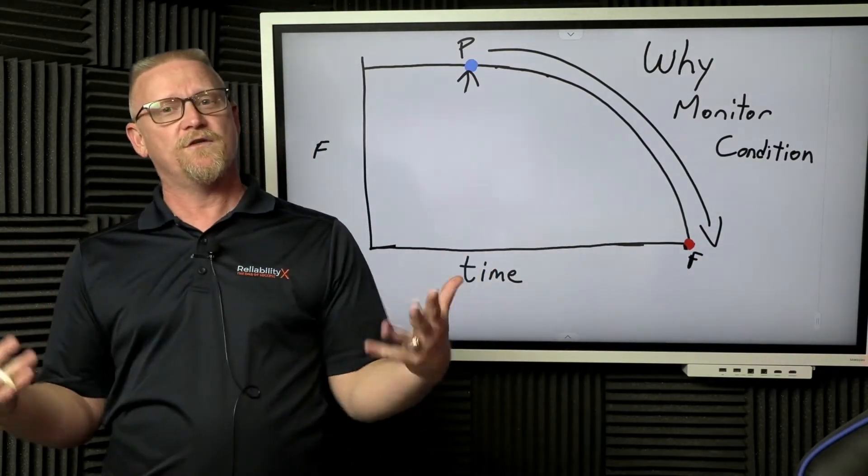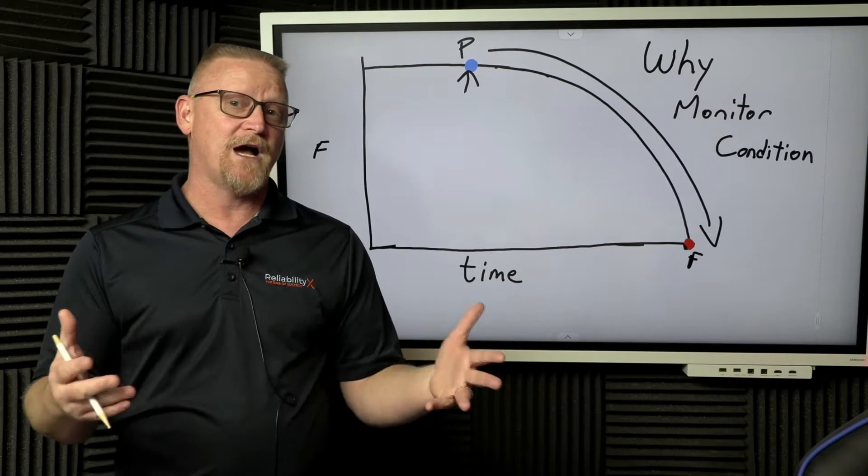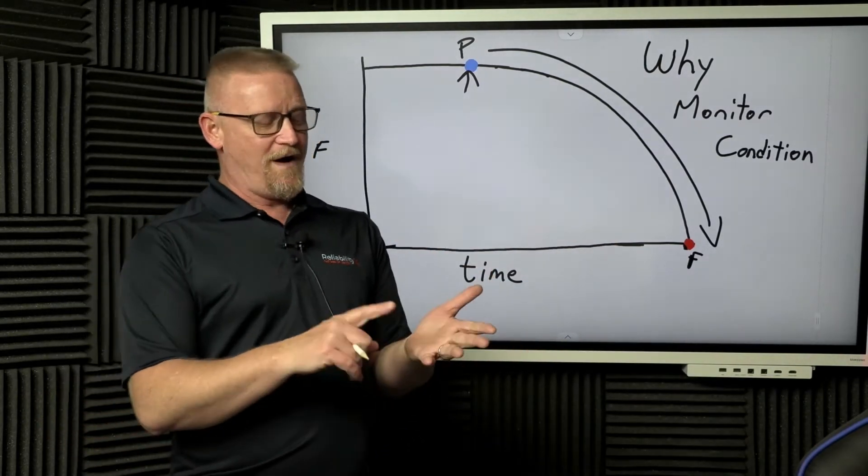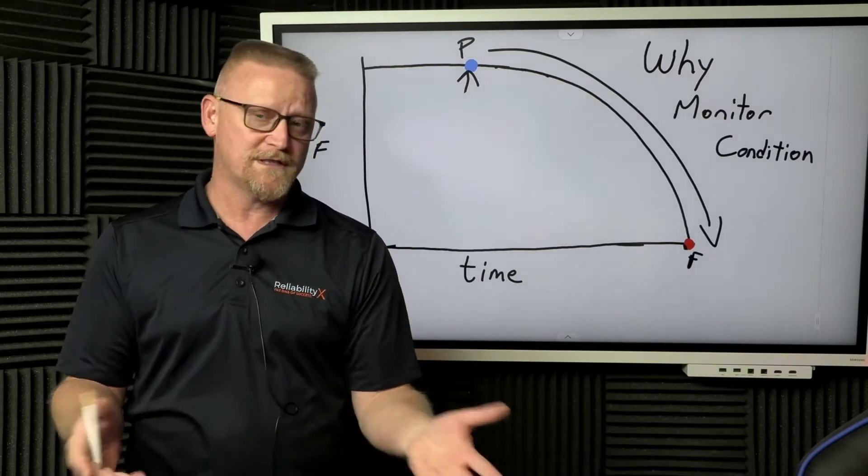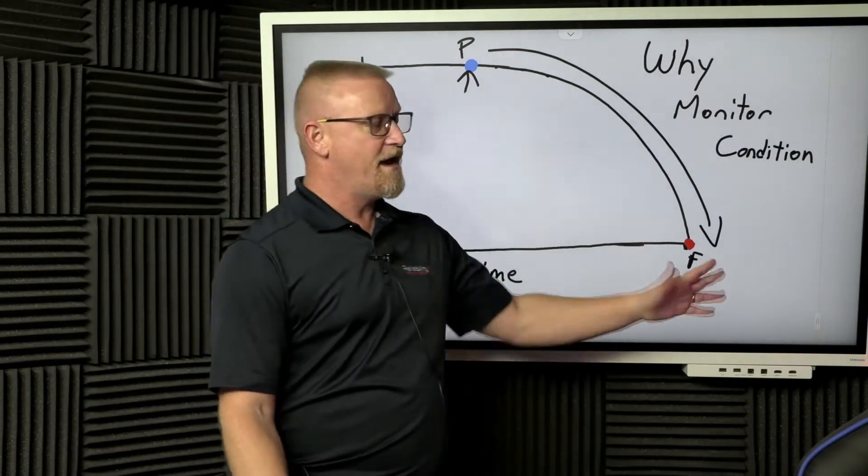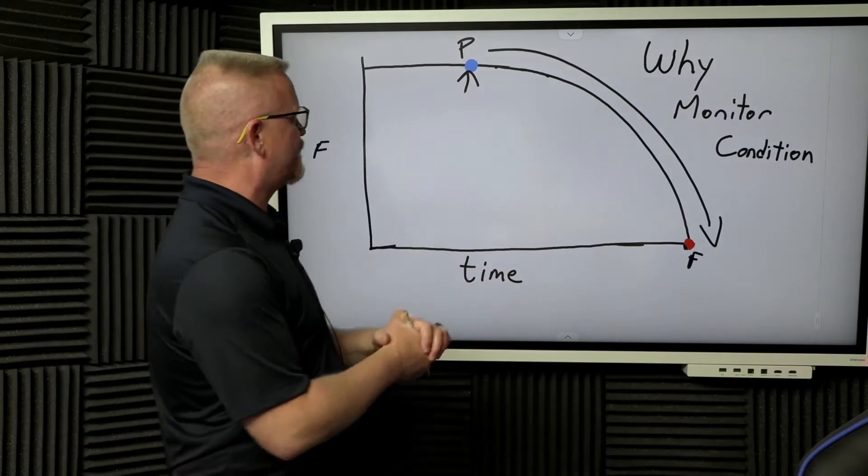Somewhere between the two of those points, I can take some intervention as maintenance. My job is to find that point as early in time as possible so I can plan and get the parts. I can coordinate with operations when it is most convenient to get the work done, and hopefully I can get the work done before I ever reach this functional failure, this complete total catastrophic event.